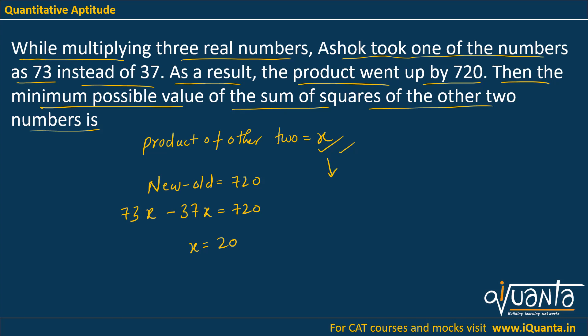So this means that the product of the other two numbers was equal to 20. Now what we have to do is minimize the possible value of sum of squares of the other two numbers. So x is the product of two other numbers—let them be a and b. So a times b must equal 20. I have to minimize the value of a² + b².